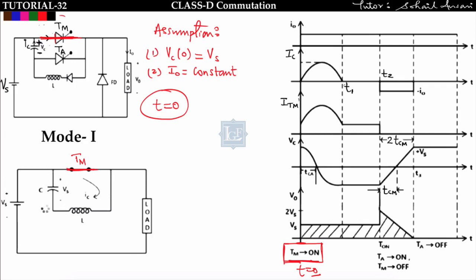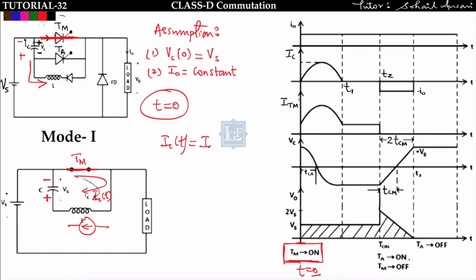The capacitor delivers energy to the inductor, and the inductor behaves like a current source, giving energy back to the capacitor. At the end of Mode 1, the voltage drop across the capacitor reverses to minus-to-plus. At this point, the diode becomes reverse biased and prevents further current flow. So in Mode 1, triggering TM causes capacitor voltage reversal through the LC resonant circuit. The capacitor current ic(t) for this discharging LC circuit is ic(t) = ICP·sin(ω₀t).